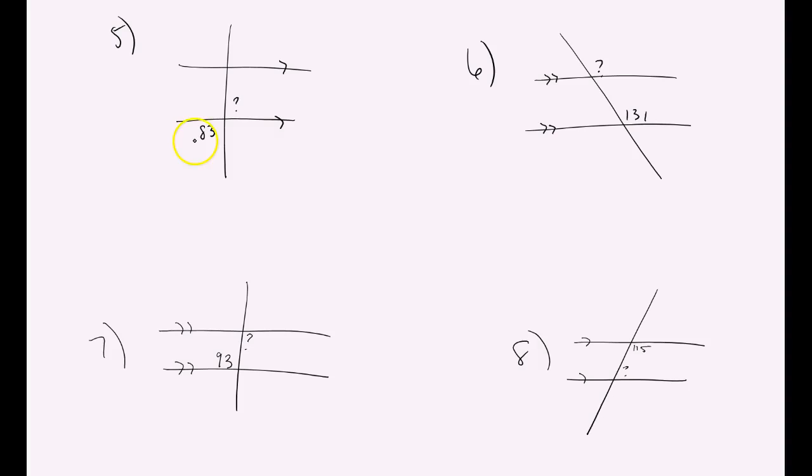Now, on this one, if they're giving us 83 is down here, and they want to know about this angle, you first have to decide how does this relate to this. Since they back up to each other on a diagonal, they are vertical angles. And what's true about vertical angles? Well, vertical angles are congruent, which means the question mark is 83 degrees. So that's all you do. Notice the relationship, and then decide congruent or supplementary.